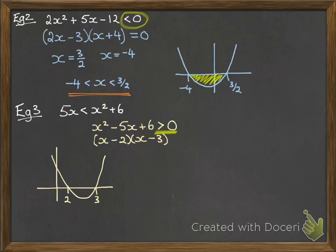Now our inequality says we're looking for greater than zero, so looking at the graph we've got those two sections there, which gives us that x has got to be less than two and x has got to be more than three.